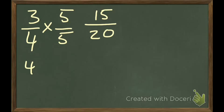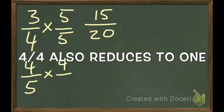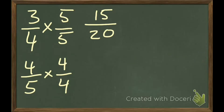And if I want to do four fifths, I'll do that down here, four fifths, you're going to times that by four fourths. Four fourths is one. So you're not changing the number and that will be 16 over 20.